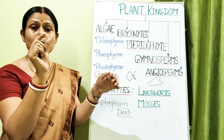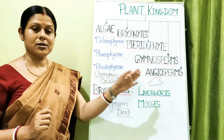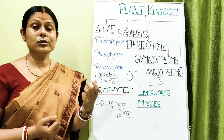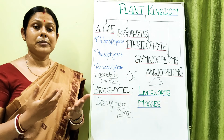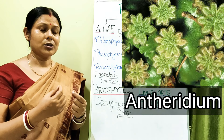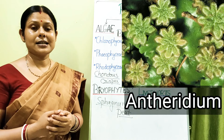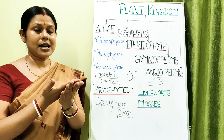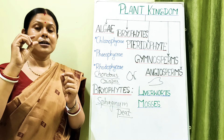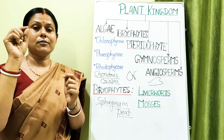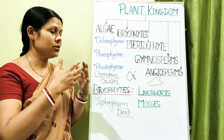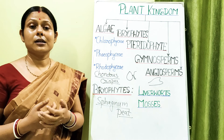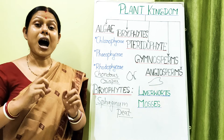In liverworts, the male gametophytic plant body, when mature, develops a branch called the antheridiophore, bearing an umbrella-like structure at the top called the antheridium. Inside the antheridium are flask-shaped structures containing the male gametes, which have flagella and can move through water toward the female plant body.